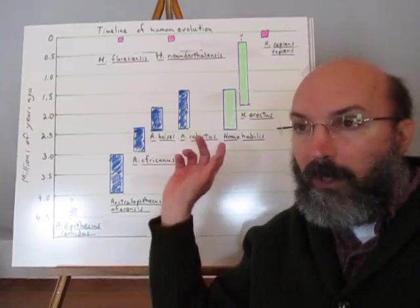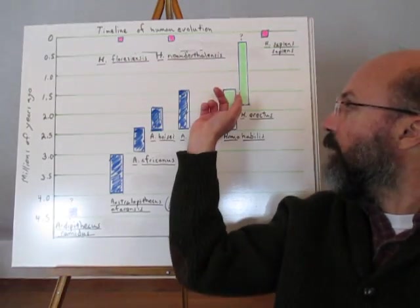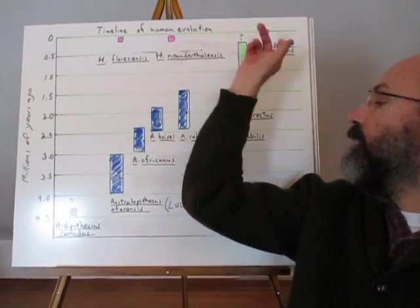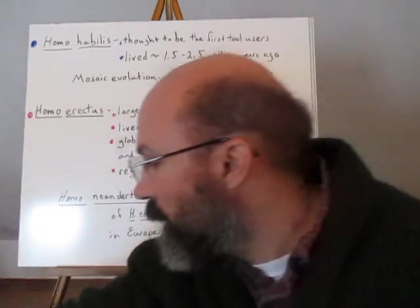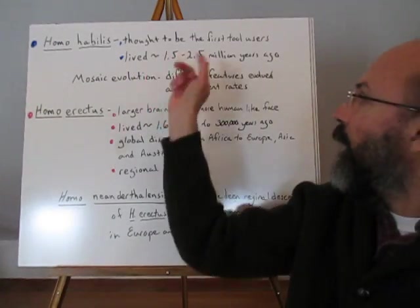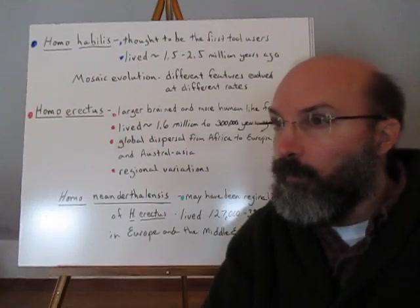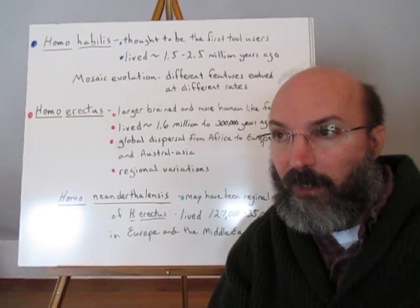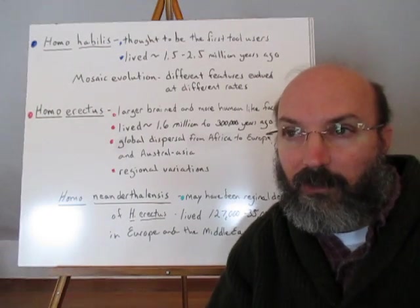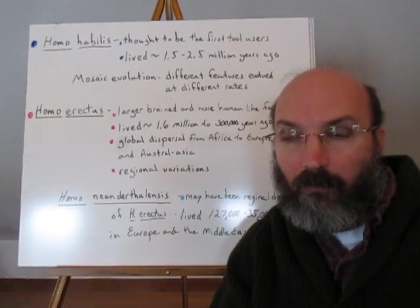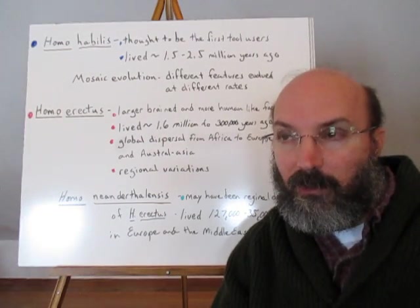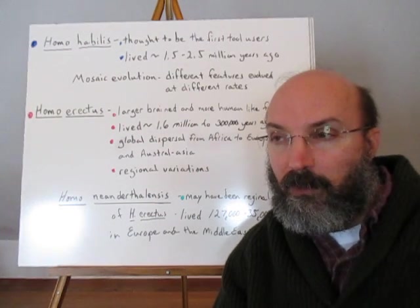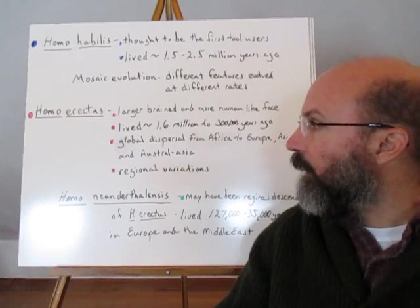One idea is that Homo erectus is actually the ancestor of modern humans, and that regional variations of Homo erectus eventually led to Homo florensis, Neanderthalensis, and Homo sapiens. Homo habilis existed 1.5 to 2.5 million years ago. One of the key ideas surrounding Homo habilis and all early hominids is that evolution didn't take place in any linear fashion. There were a number of different characteristics that evolved in different places at different times. For example, they were bipedal — walking upright — before they actually acquired larger brains.